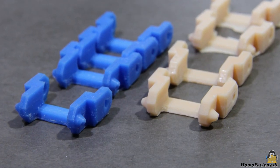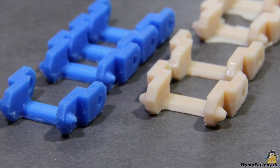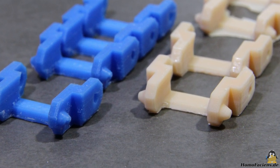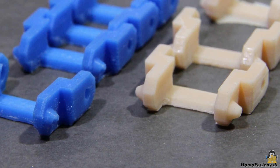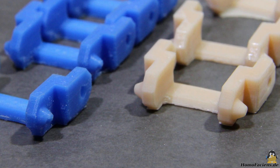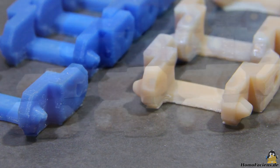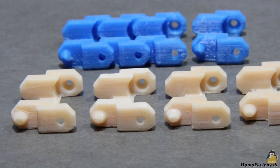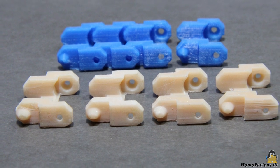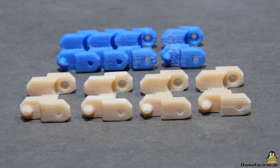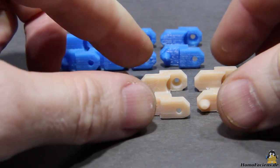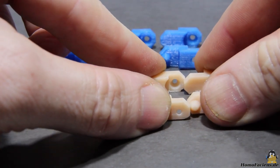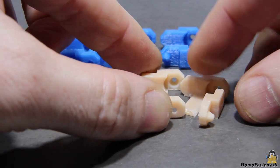For comparison, I've printed the tiny 20x26x9mm chain links from PLA with my Ender, using a 0.2mm nozzle and a layer thickness of 0.05mm. The prints made with the Orange 10 look a bit smoother, the only drawback is the brittleness of the cured resin. The links cannot be assembled to a chain as it is the case with the parts from the filament printer.